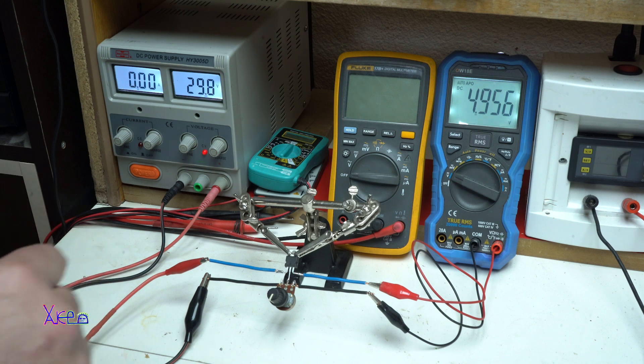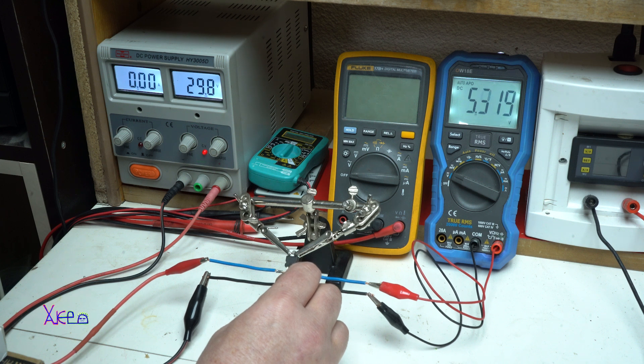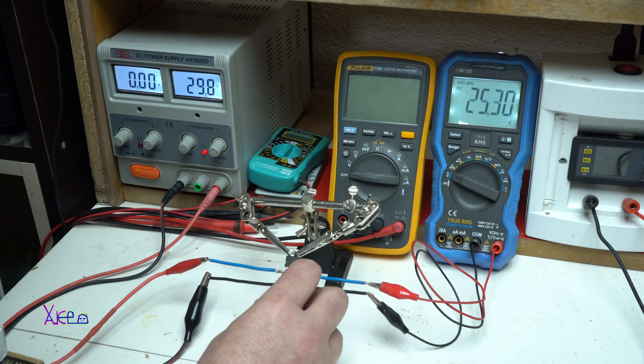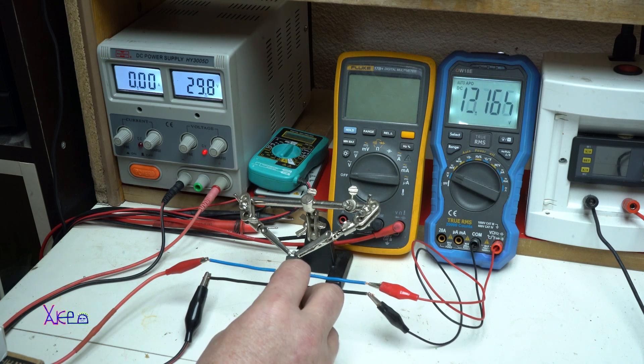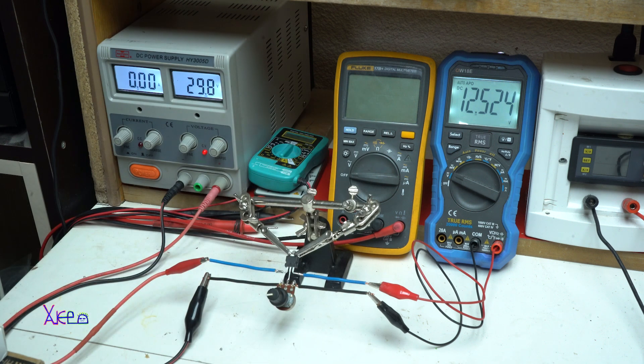With adjusting the voltage on the potentiometer, you can increase the voltage. Look, 8.5 volts, 11, 17, 25, 29.8. And let's leave it on 12.5 volts.